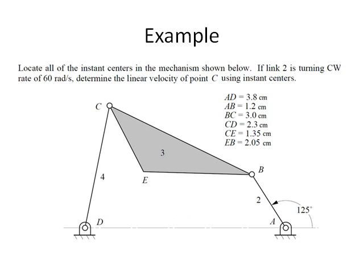Let's do an example. Locate all the instant centers in the mechanism shown. If link 2 is turning clockwise at the rate of 60 radians a second, determine the linear velocity of point C using instant centers. The lengths of the links are given.